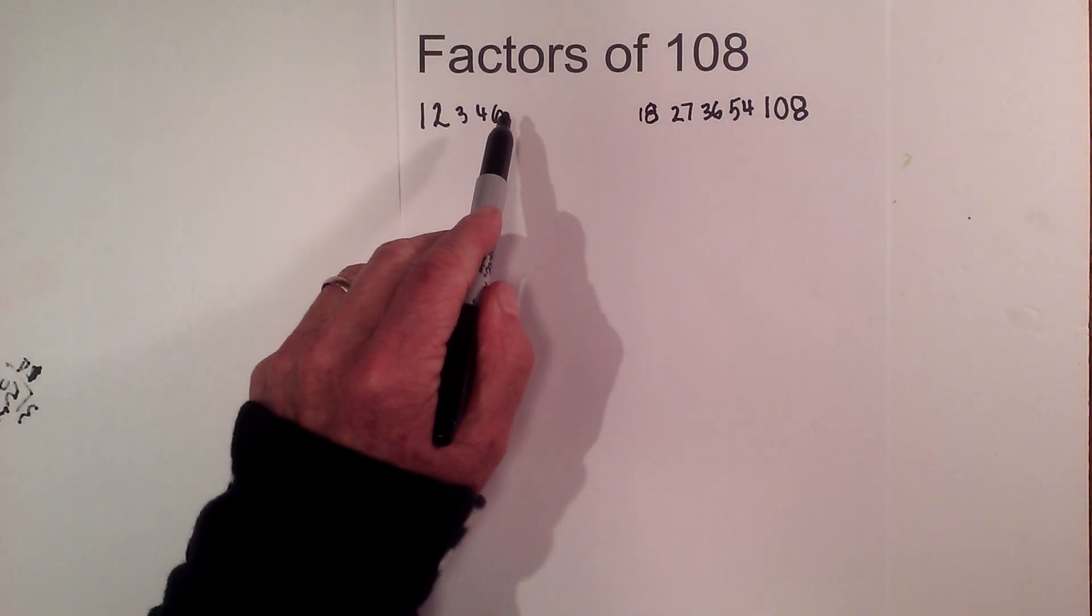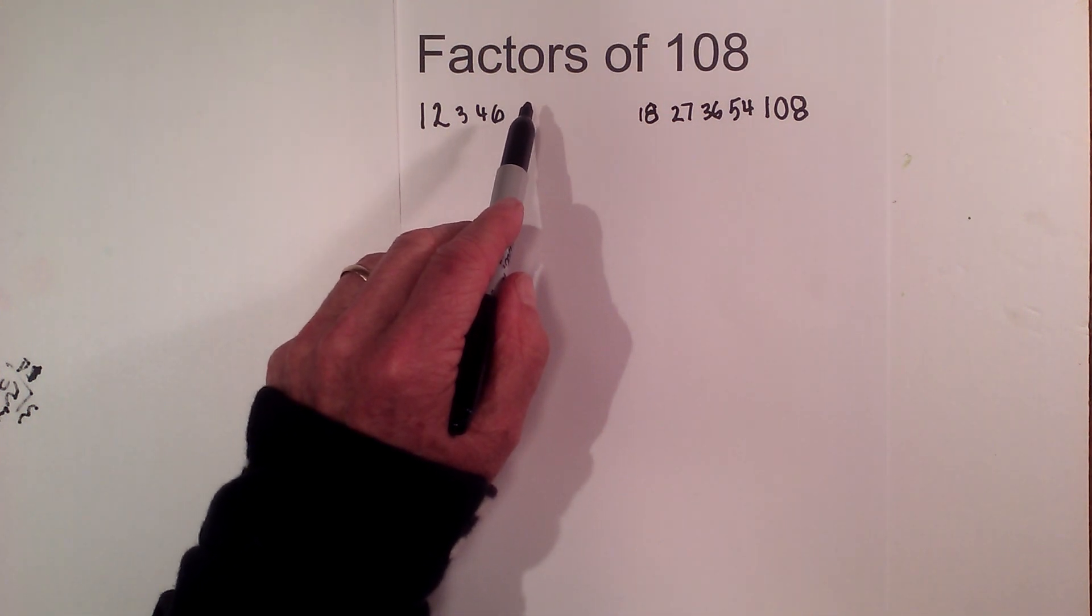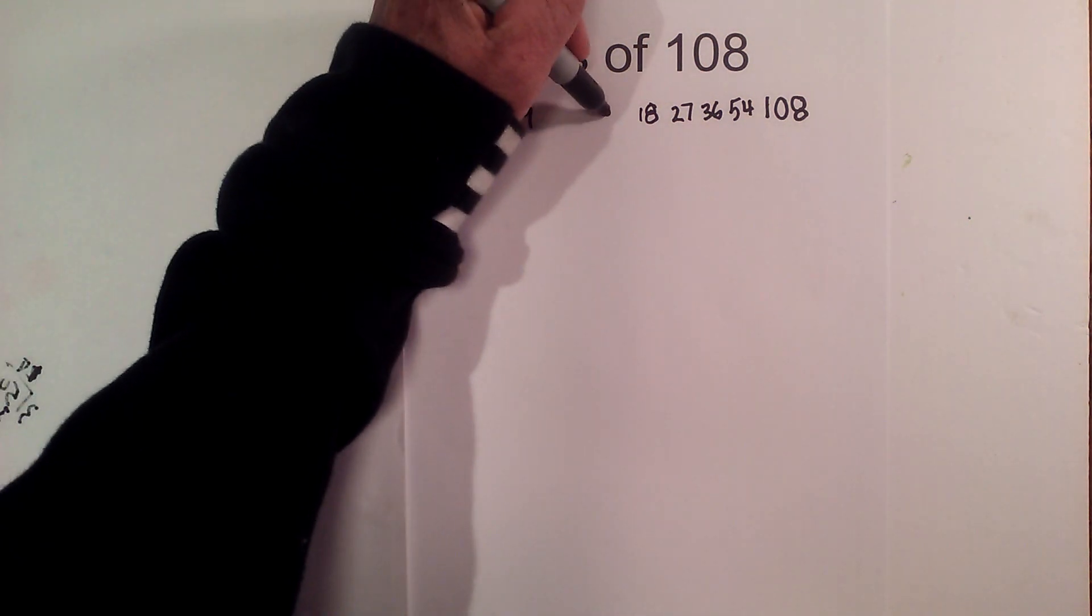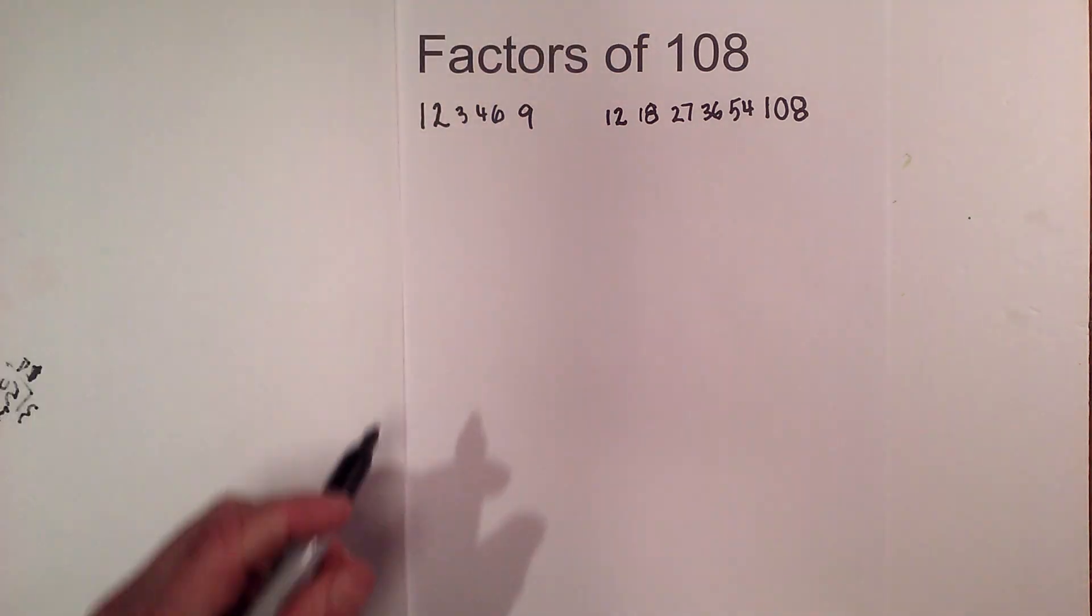Now does 7 go into 108? No, 7 does not go into 108. 8 does not go into 108. But 9 goes into 108, and 9 times 12 is 108.